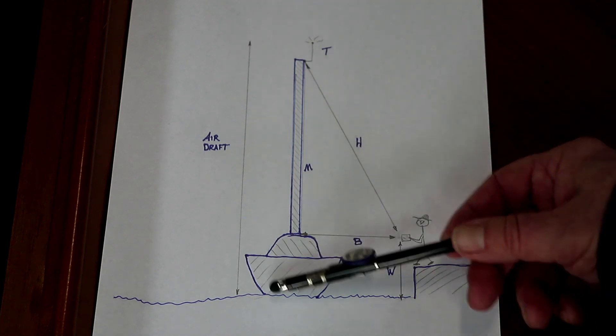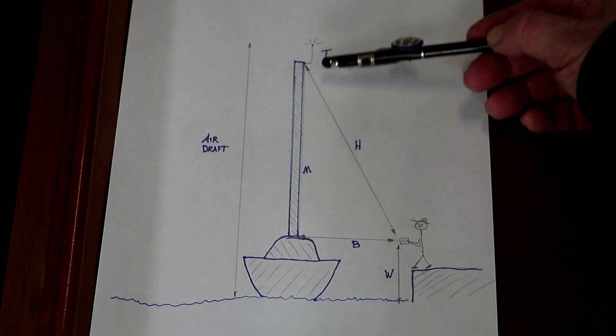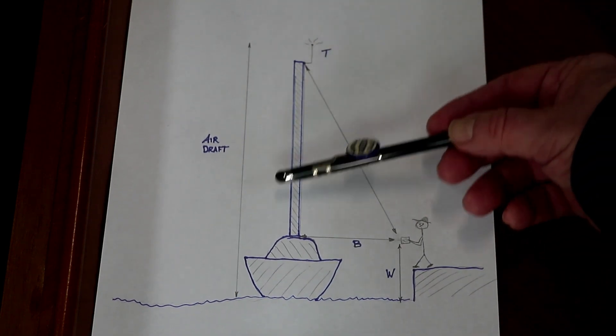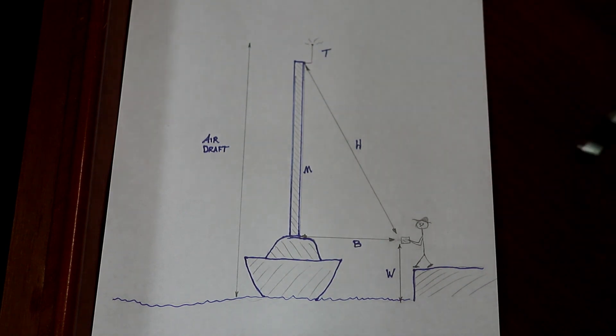In the end, the air draft is going to be W plus M plus T, and that will give us the total distance or the total length of the air draft of this vessel.